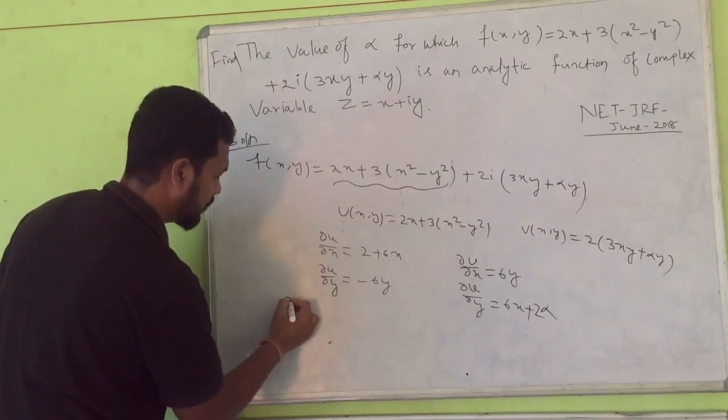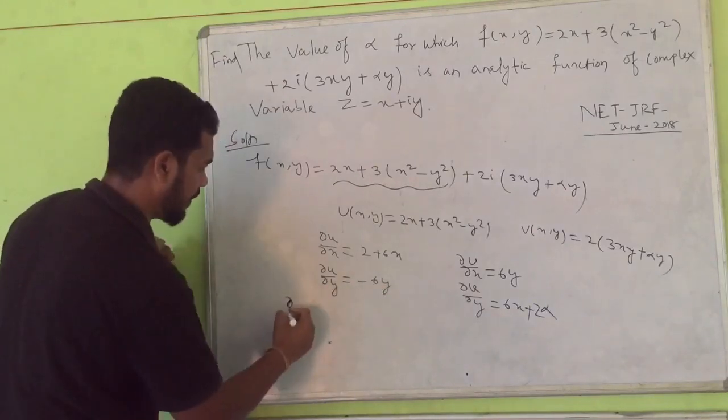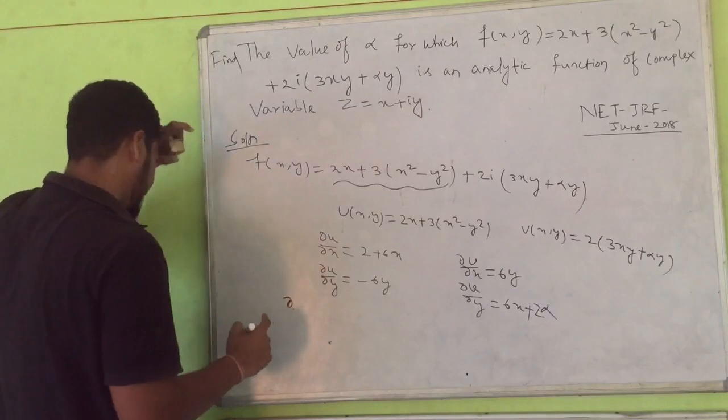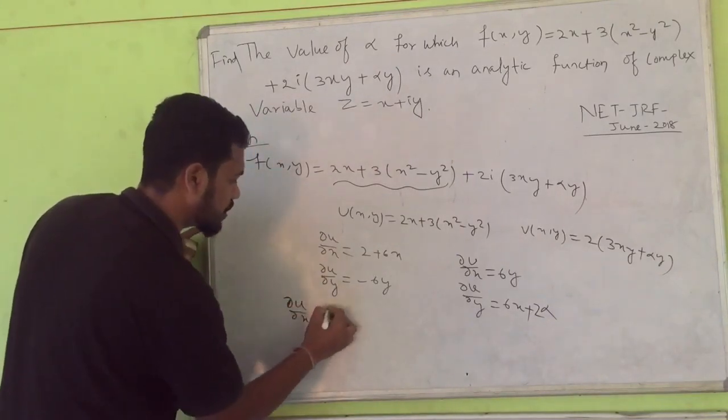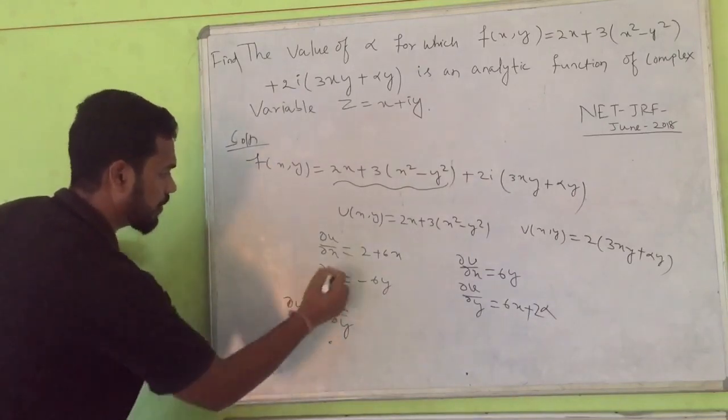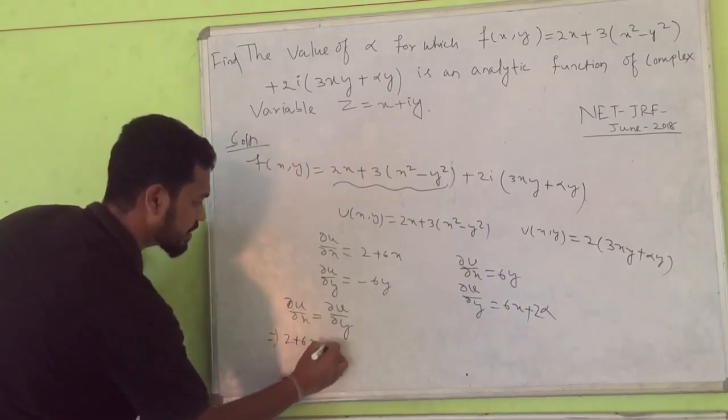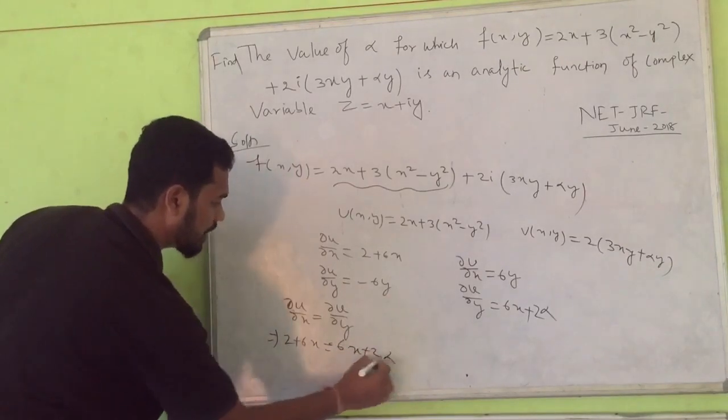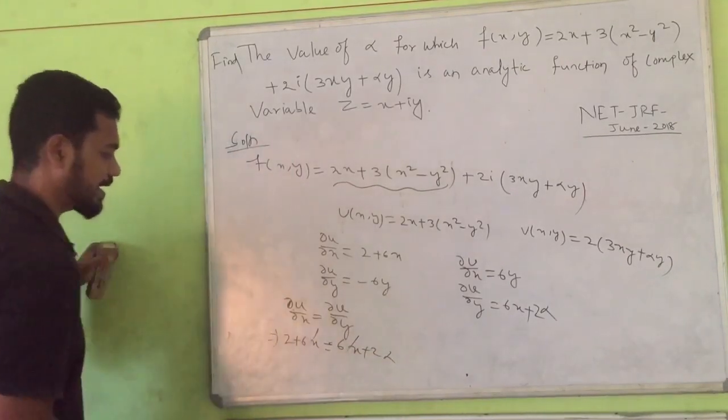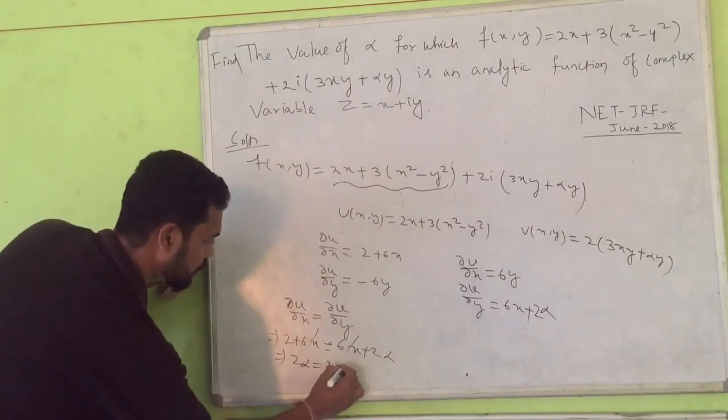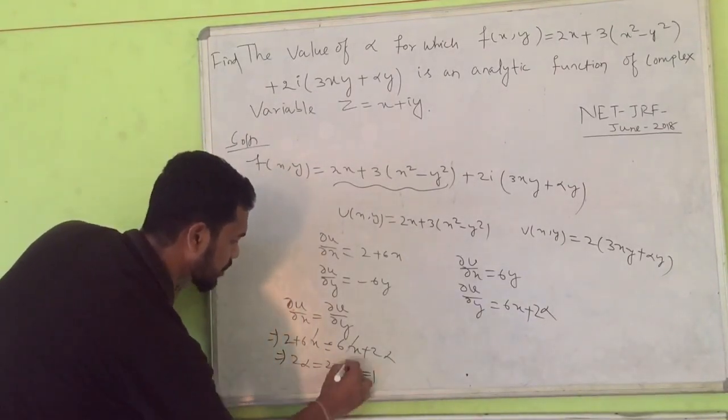To find the value of alpha, just relate with the first Cauchy-Riemann condition which is del u upon del x equals del v upon del y. So 2 plus 6x must be equal to 6x plus 2 alpha. Your 6x gets cancelled, the remaining part is 2 alpha equals 2, from which you will get alpha equals 1.